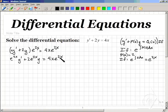Now, we realize that the left side becomes the product rule in reverse, would be e to the 2x times y, that we're taking the derivative of. And that's equal to 4x e to the 2x.